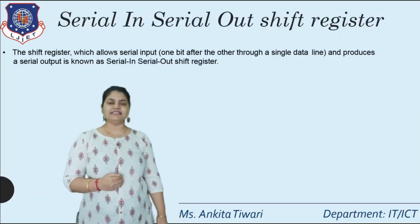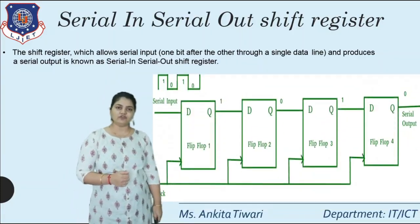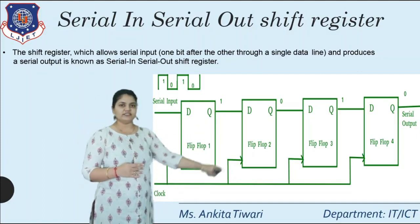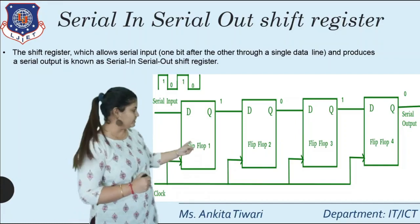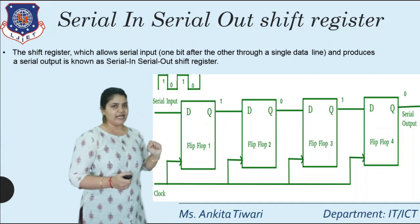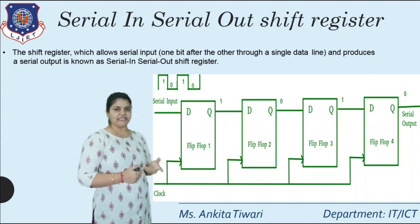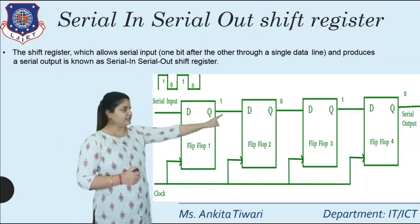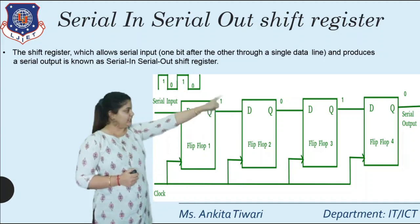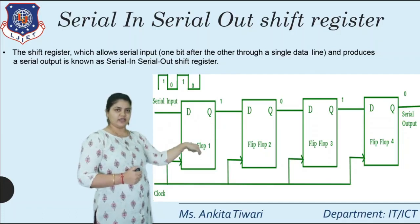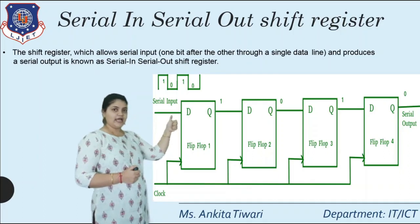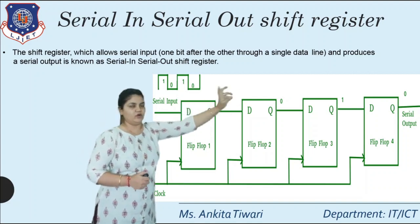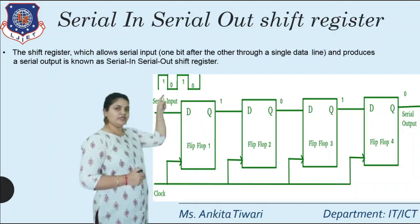We start with the first type: Serial In Serial Out (SISO) shift register. As shown in the diagram, we take an example of a four-bit forward shift register using four flip-flops — flip-flop one, two, three, and four. Each flip-flop has a D input and a Q output. The serial input is given at the first flip-flop, and the output is taken serially — sequentially, one by one — from the last flip-flop.